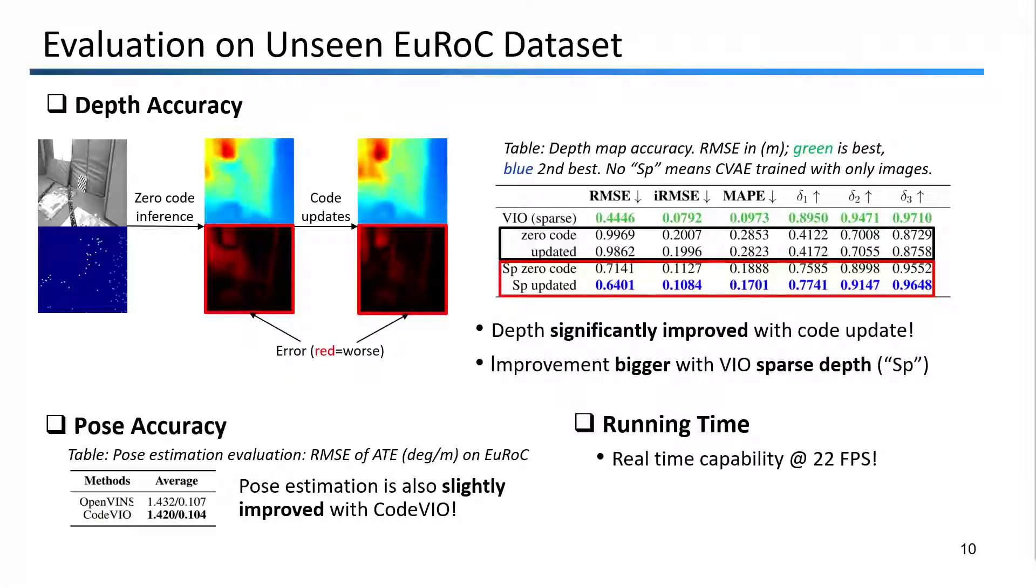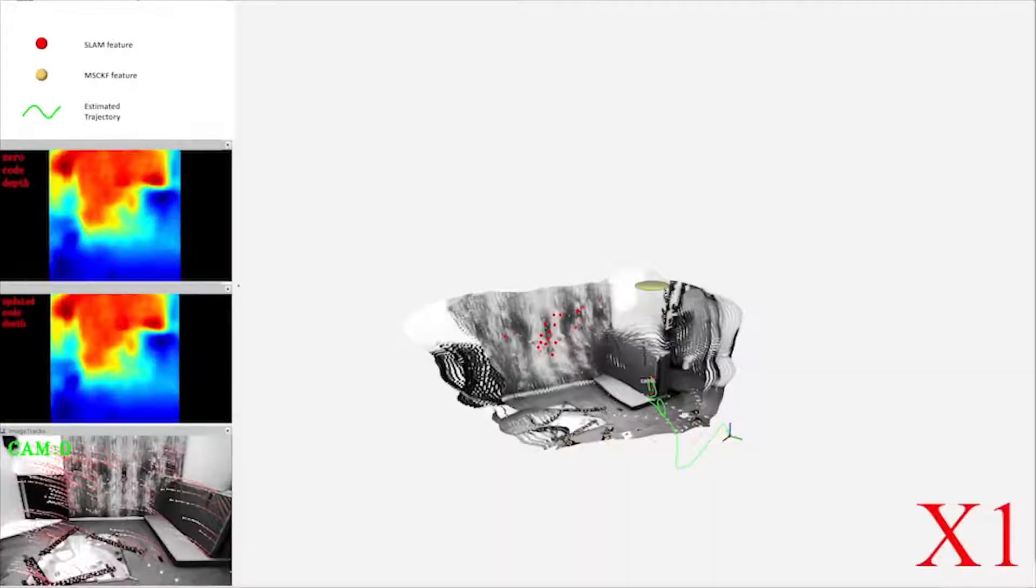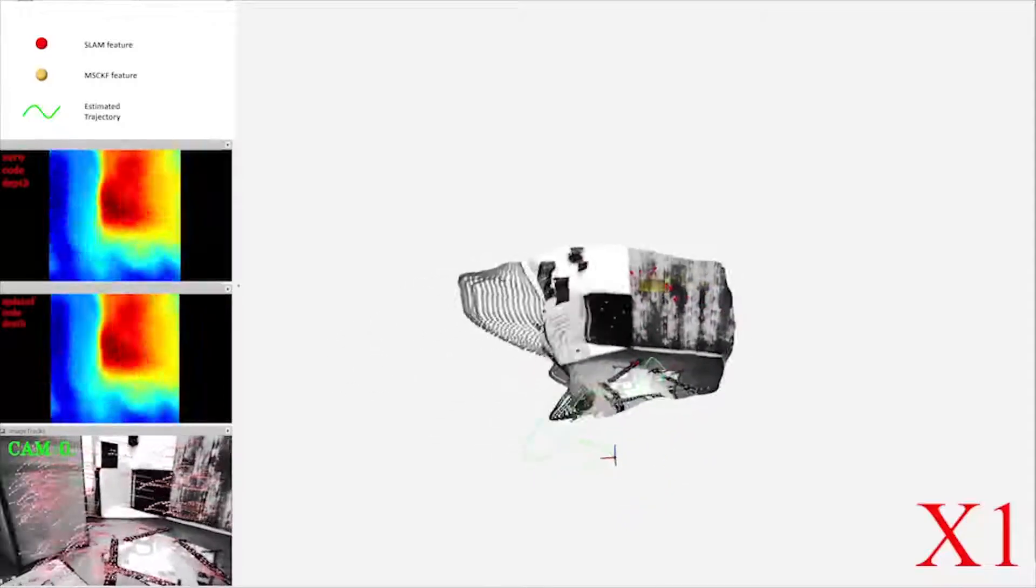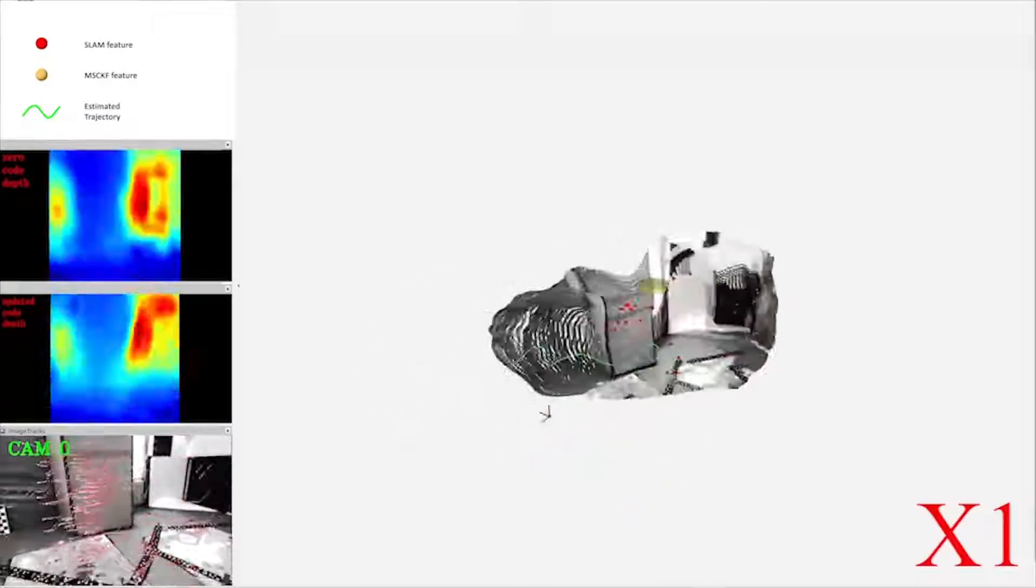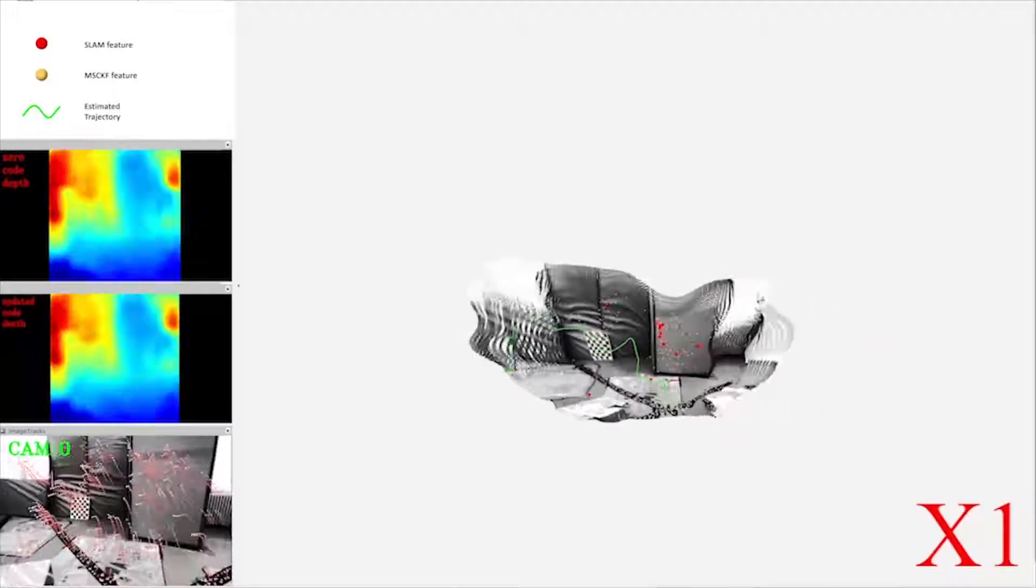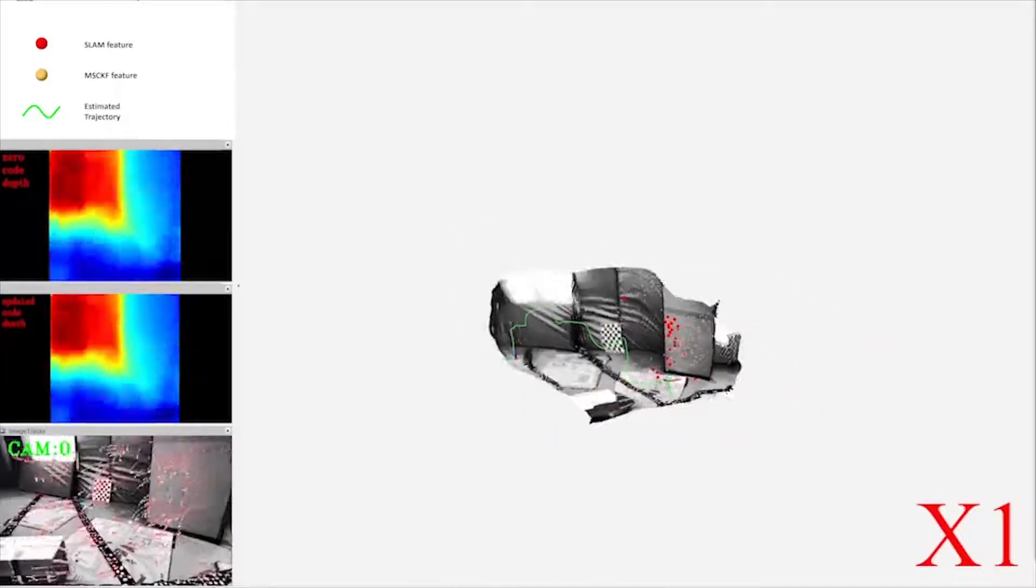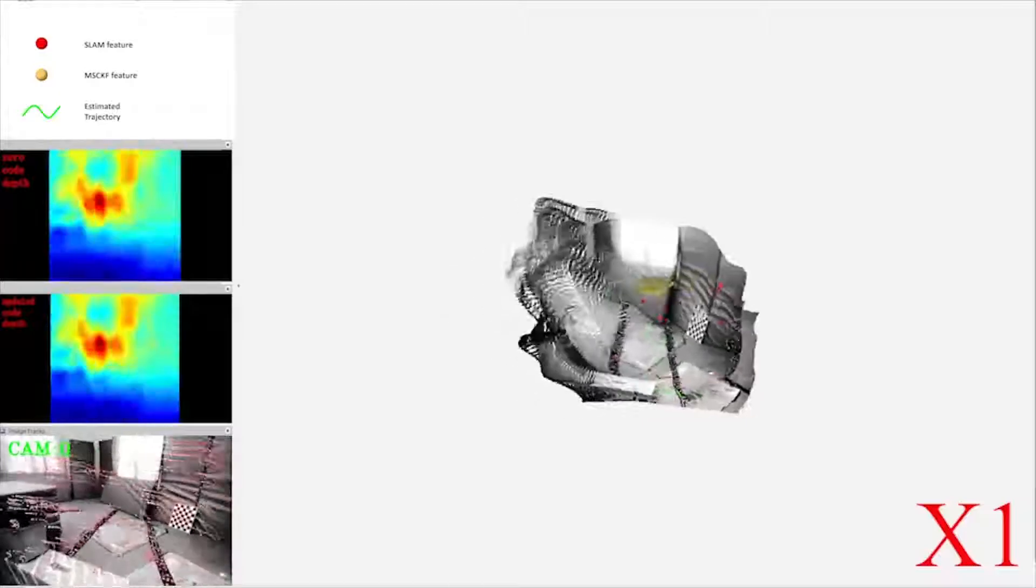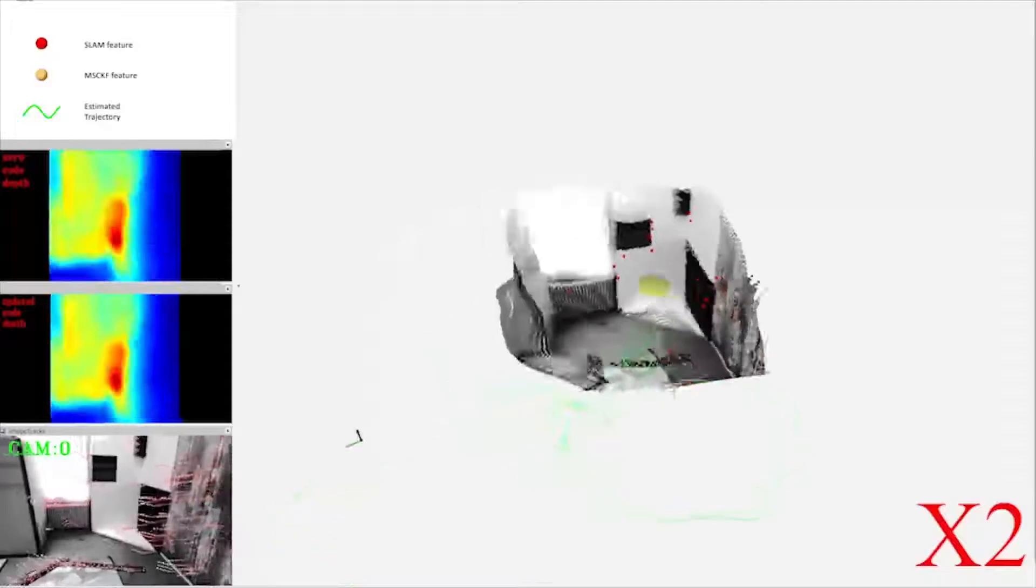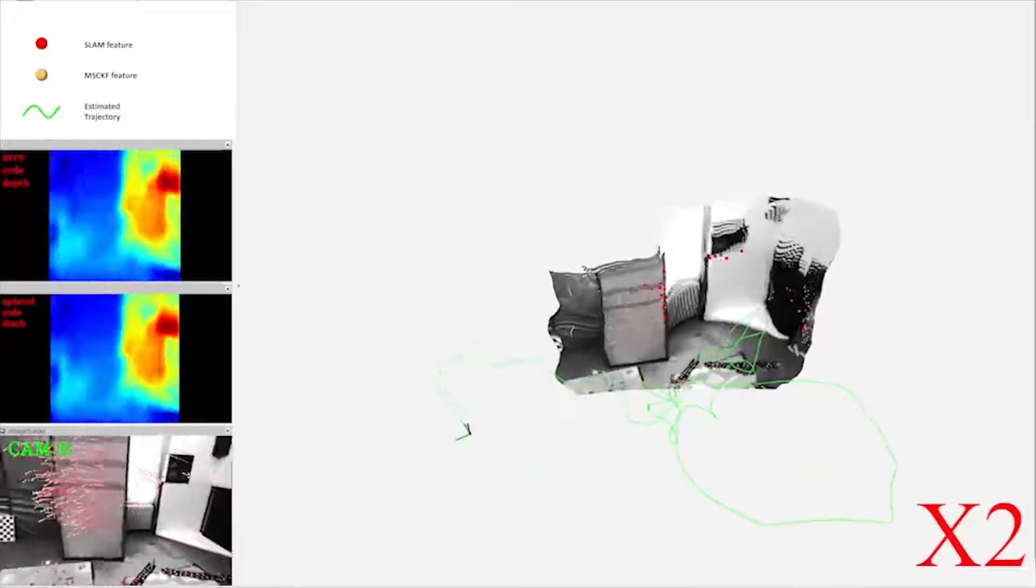Our system can also run in real time at 22 frames per second. Here is a demo of our system running. In the left sub-windows you can see from top to bottom the most recent zero code depth, updated depth, and current image with feature tracks. The point cloud of the local dense map is shown on the right. As you can see, our system provides reasonable dense reconstructions of the immediate surroundings in real time.